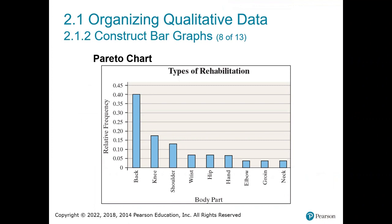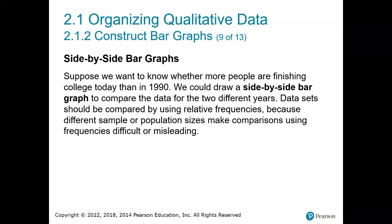So that's the Pareto chart going from back down to neck. To recap, we've looked at two bar graphs so far: a regular bar graph and a Pareto chart. We can also create a side-by-side bar graph — that's our third type. Suppose we want to know whether more people are finishing college today than in 1990. We could draw a side-by-side bar graph to compare data for the two different years. Data sets should be compared using relative frequencies because different sample or population sizes make comparisons using raw frequencies difficult or misleading.